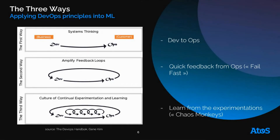The third way is about experimentation and what you will learn from those experimentations. Netflix invented the chaos monkeys: they occasionally turn off machines or alter data in traffic to see how the system handles it. Working like this gives you a better idea of how robust your system is.